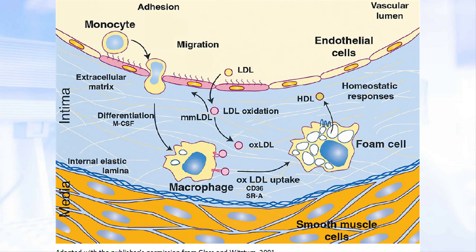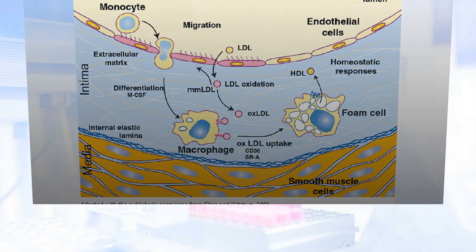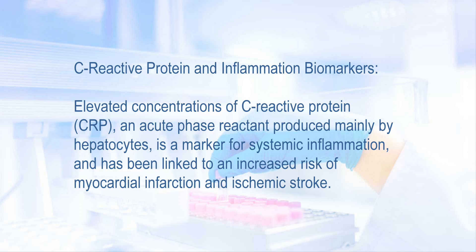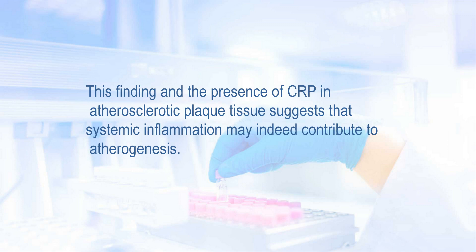Next, we're going to discuss the types of connective tissue — glycosaminoglycans and proteoglycans — which are synthesized by the smooth muscle cells in the intima. These also render these sites prone to lipid accumulation due to the capacity of these macromolecules to trap lipids in the intima. Next, we're going to look at C-reactive protein and inflammation biomarkers. Elevated concentrations of C-reactive protein (CRP), an acute phase reactant produced mainly by hepatocytes, is a marker for systemic inflammation and has been linked to an increased risk of myocardial infarction and ischemic stroke.